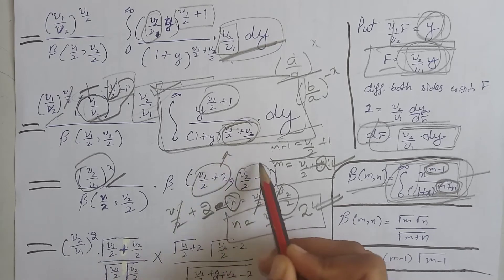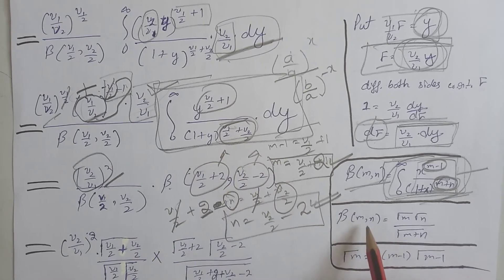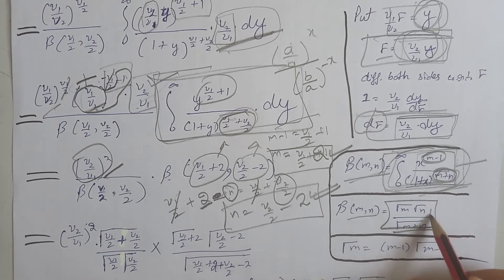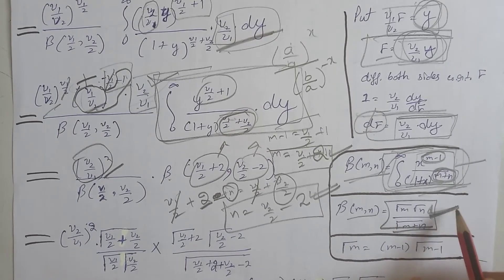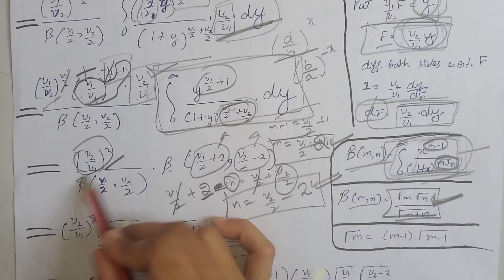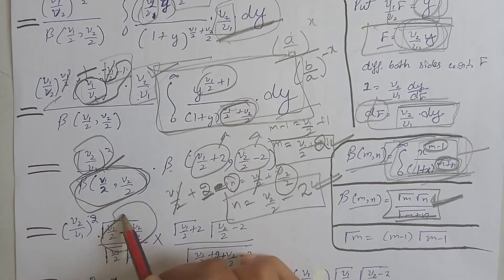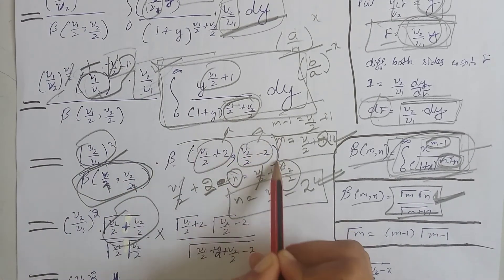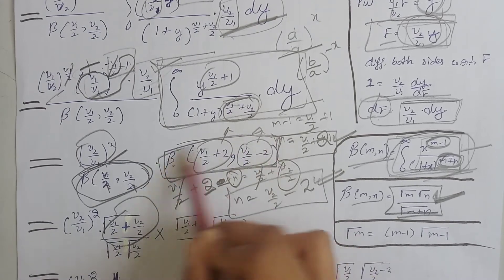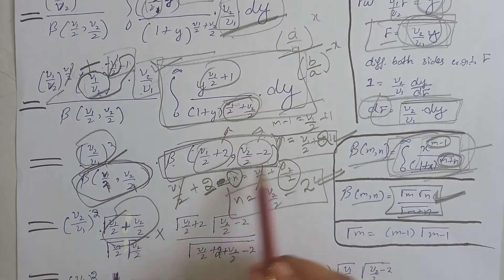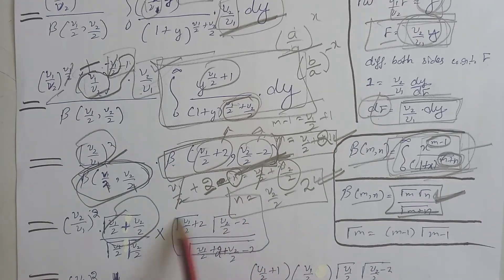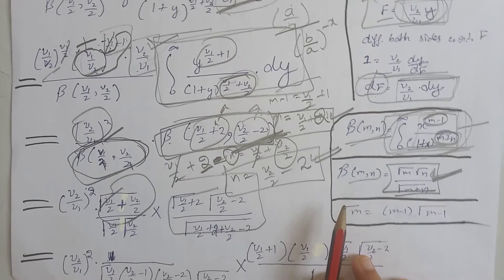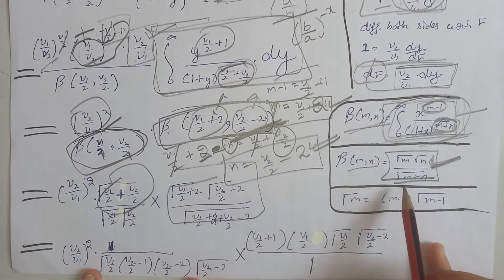Now that we have m and n, the whole integral equals Beta(m, n). We expand the beta function in terms of the gamma function. Applying the gamma function definition for both m and n, we write the expanded form. We then apply the same expansion to the second beta function term as well.